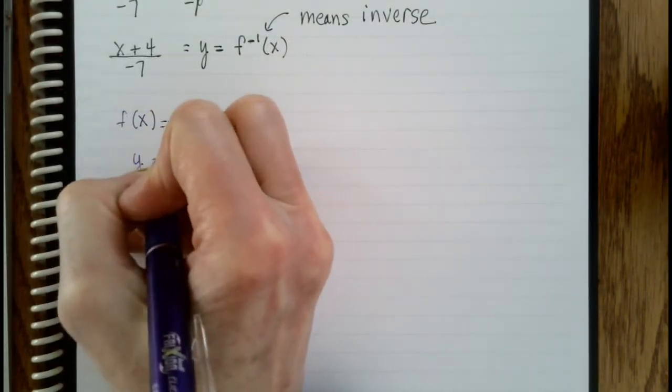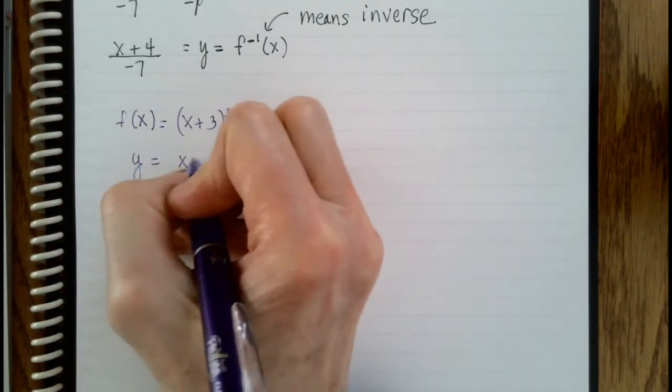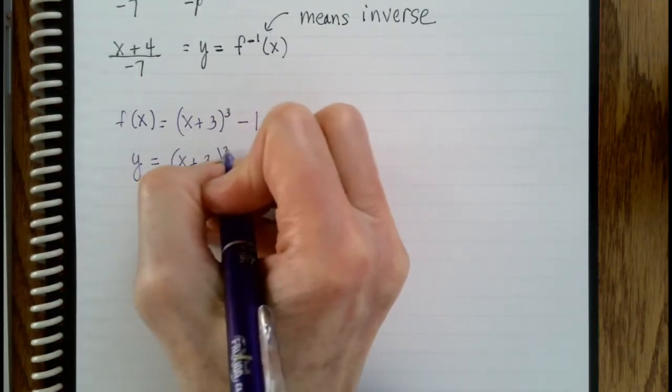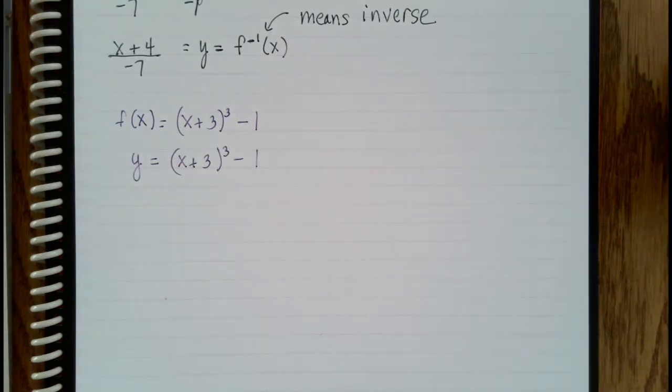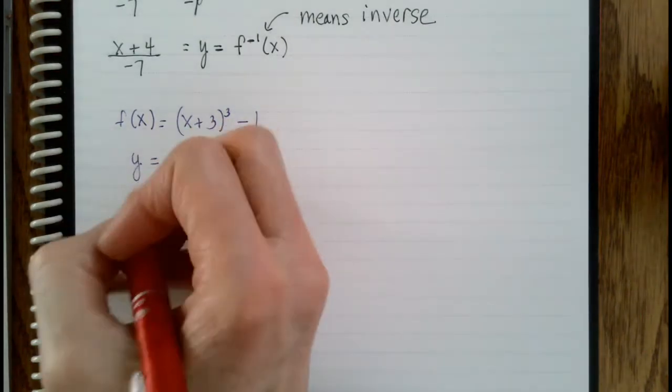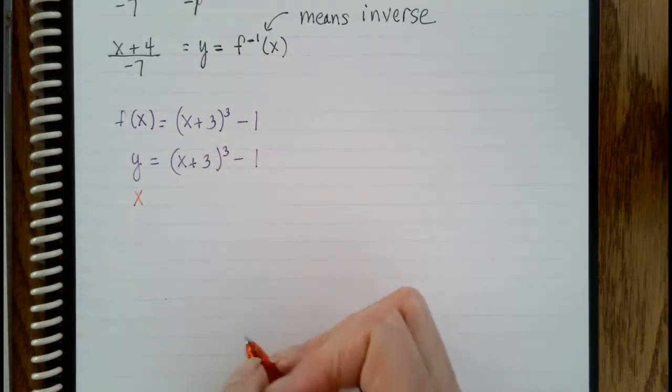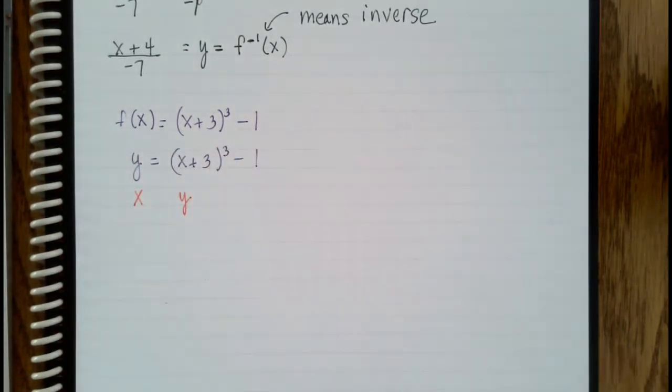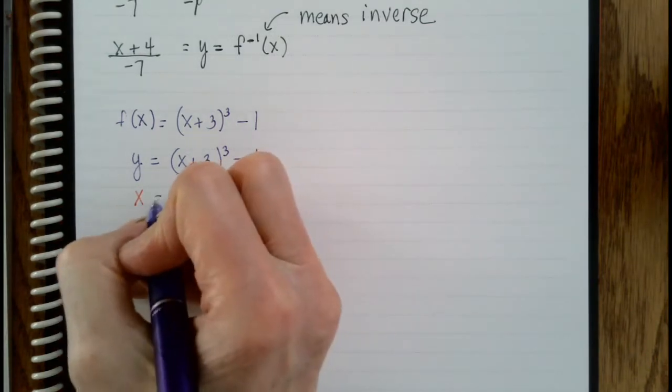So the first step, rewrite f of x as y. Second step, switch the x and the y. x goes where y went, y goes where x went. Nothing else changes.